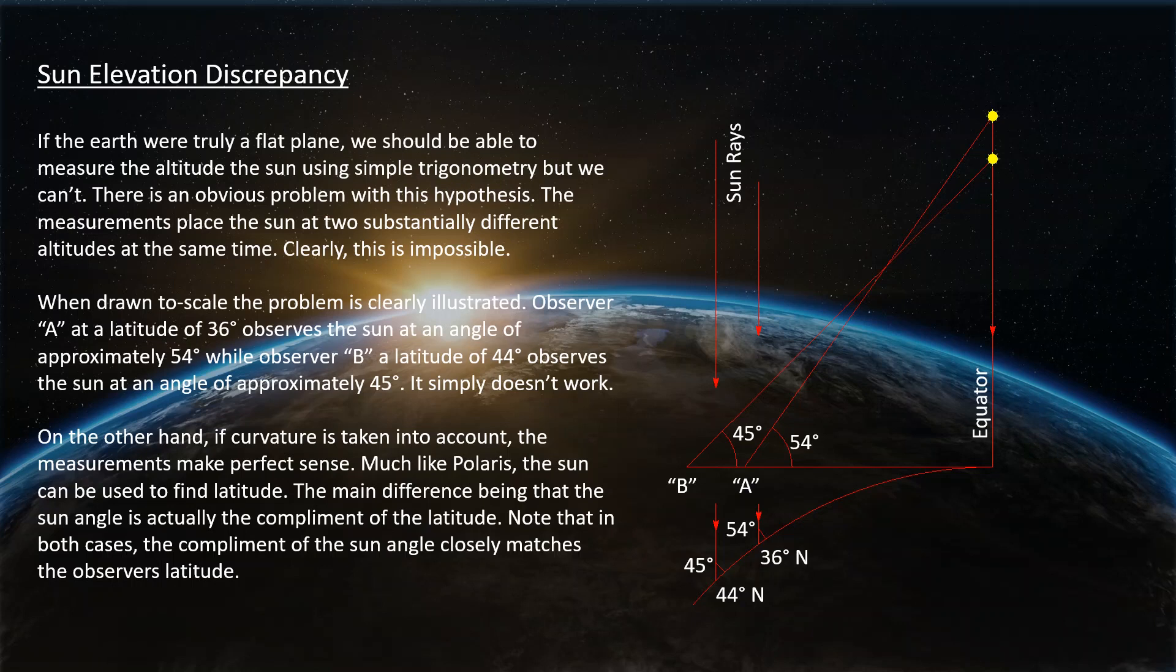Now there's a discrepancy in the elevation of the sun. Let me explain what I'm talking about. The triangle on the right shows you a two-scale representation of the measurements we made. My measurements at position A, which is 36 degrees north latitude, gave me a sun angle of 54 degrees, while Bob, at position B, saw the sun at an angle of 45 degrees. When we draw that out, you can see what the problem is. The sun is at two radically different elevations. Well, that won't work.